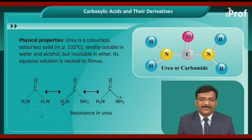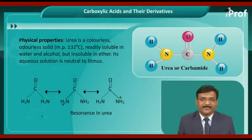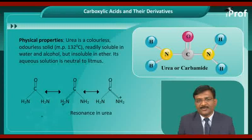Properties of Urea. The physical properties of Urea: Urea is a colorless, odorless solid having a melting point at 132 degrees centigrade.